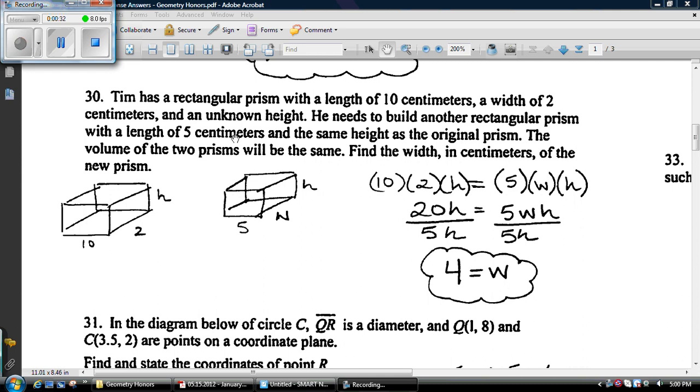Question number 30. You've got two rectangular prisms, and they have the same volume. Volume of prism is length times width times height. So we've got 10 times 2 times h, that's the volume of this prism. We've got 5 times w times h, that's the volume of this prism. And you set them equal to each other. You solve them. The trick is here, there's two unknowns, but both of these have h in it. So you divide out by h and 5, and then you get just w equals 4.